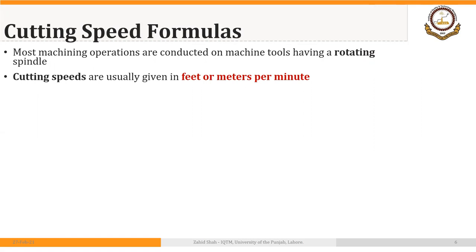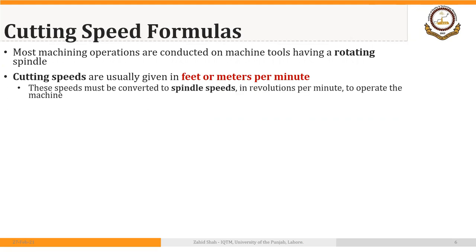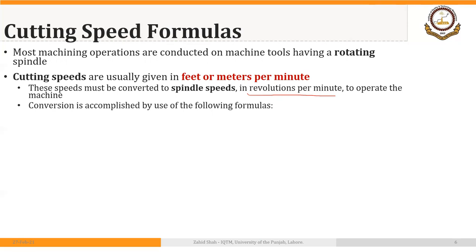Most machining operations are conducted on machine tools having a rotating spindle — such as an engine lathe, milling machine, or drilling machine. Cutting speed generally links to the rotation of the spindle, and cutting speeds are given in feet per minute or meters per minute. These speeds must be converted to revolutions per minute to operate the machine, since RPM is what we set on the machine tool. The conversion is accomplished by use of the following formula.